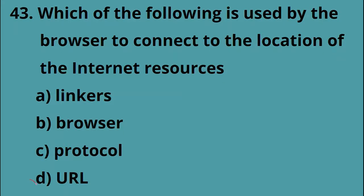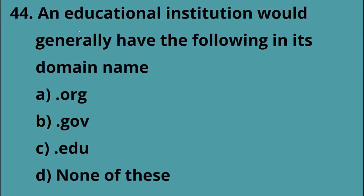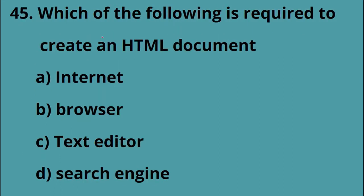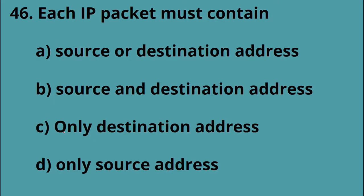The answer is Option D, URL. An educational institution would generally have the following in its domain name: Option C, .edu. Which of the following is required to create an HTML document? The answer is a text editor. Each IP packet must contain a source and destination address.